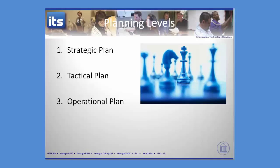Welcome back. We're now looking at different types of planning levels. There are three tiers of planning: strategic plans, which are your top-level plan for accomplishing a particular goal or objective, typically measured in years; tactical plans, which are intermediate-level plans; and operational plans, which are your bottom-level plans, much smaller in focus and shorter in timeline to implement.